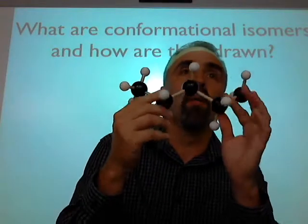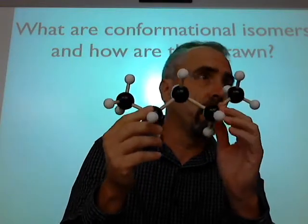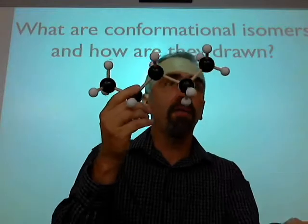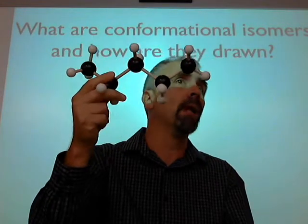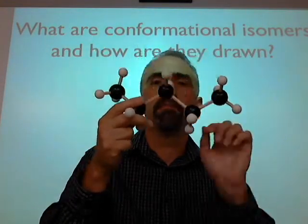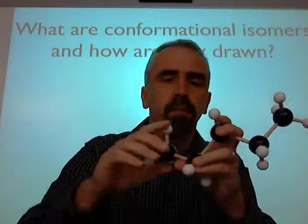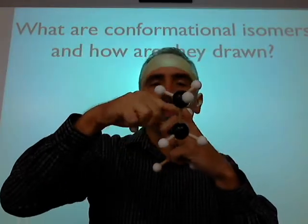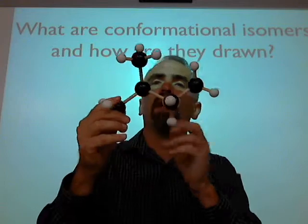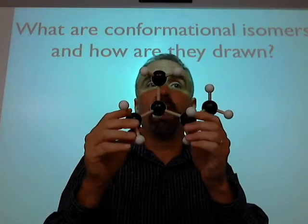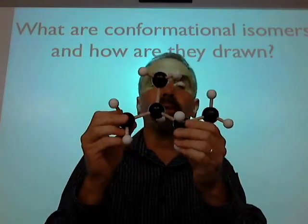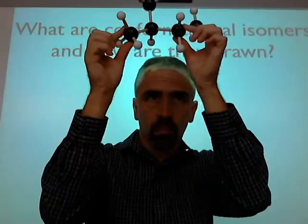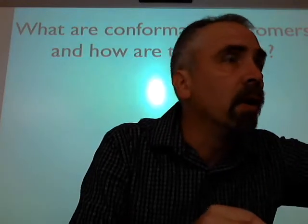Look here. Basically, what we just did on conformational isomers was easy to tell because of the obvious difference between this, which is pentane, and then this, which has the same number of carbons and hydrogens, but it's a different name, it's a different structure — 2-methylbutane.